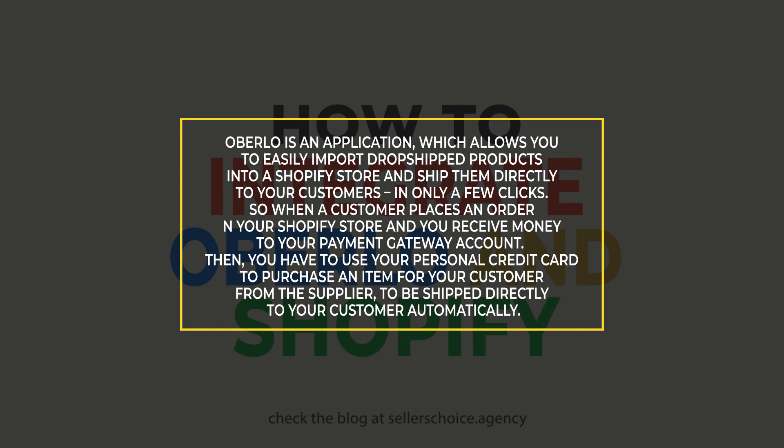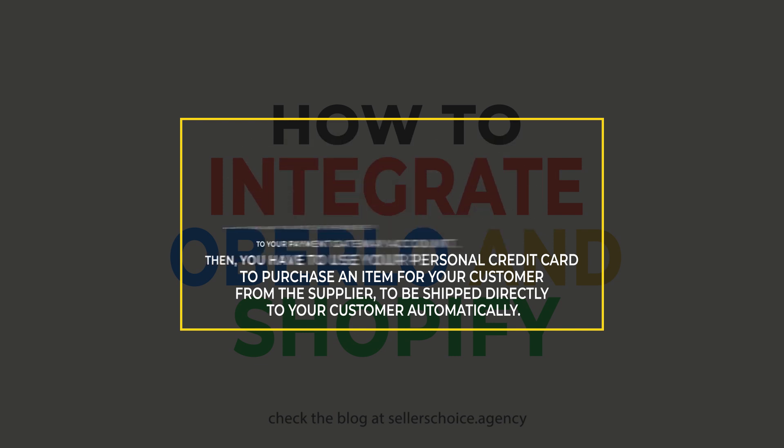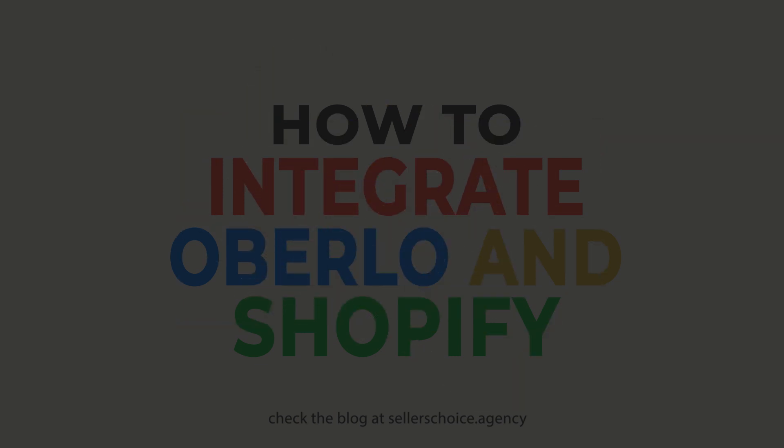When a customer places an order in your Shopify store and you receive money to your payment gateway account — let's say PayPal for example — then you use your personal credit card to purchase an item for your customer from the supplier, to be shipped directly to your customer, and this is done automatically. As a dropshipper, you don't have to stock products for yourself; you're just a liaison between your customers and the suppliers.